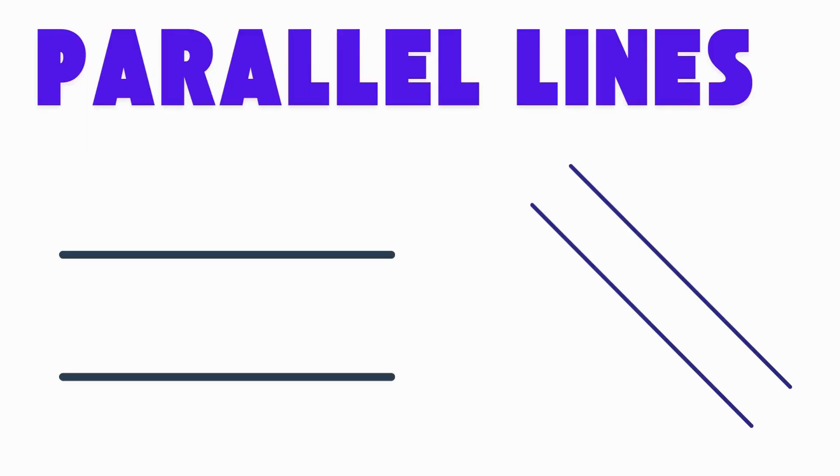Parallel lines are lines that stay the same distance apart, go in the same direction, and never touch. Say, parallel. Hold out both arms straight and level, like train tracks. Those are parallel lines.